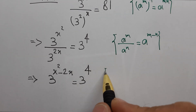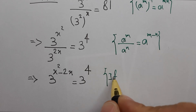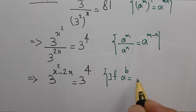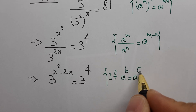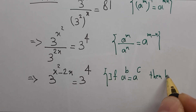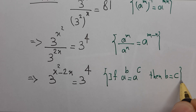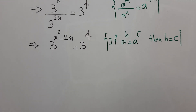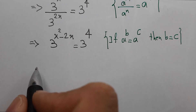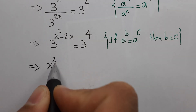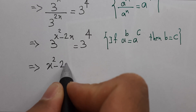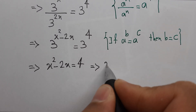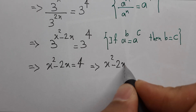Now, as you know, if a power b equals a power c, then b equals c. According to that, we can write x squared minus 2x equals 4.